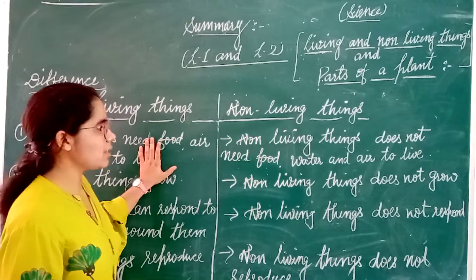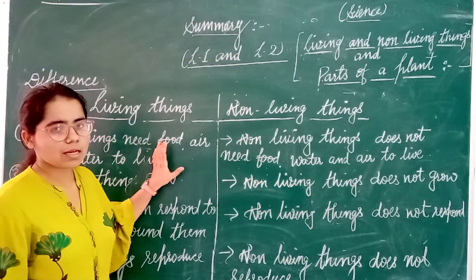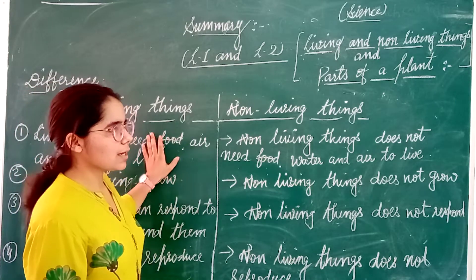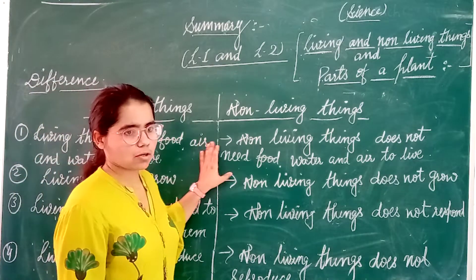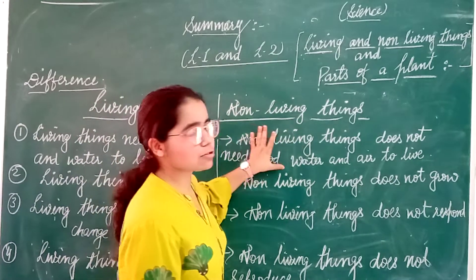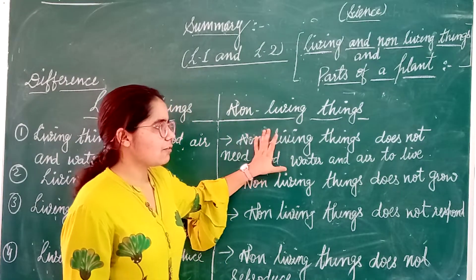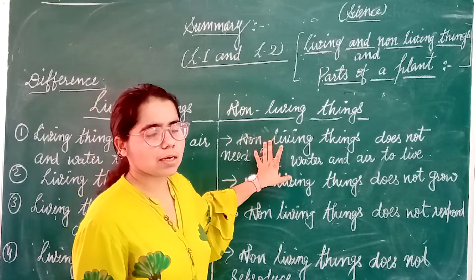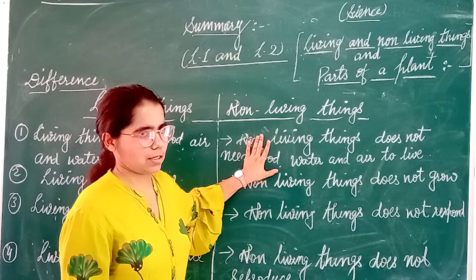We are all human, and human beings are also examples of living things. Plants and animals are all examples of living things. Non-living things — blood is also given as an example of non-living things. Fan, chair, table — all are examples of non-living things.